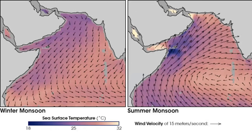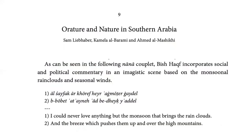The monsoon flows south during the winter and north in the summer — travelling south to Zanzibar and Kilwa, and returning north to the Red Sea, Oman, the Persian Gulf and eastwards to India. This traditional economic and cultural flow has changed hugely in recent years due to changes in transport infrastructure, resulting in a massive loss of traditional knowledge and connection with nature. This poem from the book illustrates the cultural resonance of the monsoon: 'I could never love anything but the monsoon, that brings the rain clouds and the breeze which pushes them up and over the high mountains.' Janet will also be reading a poem at the end of her talk.